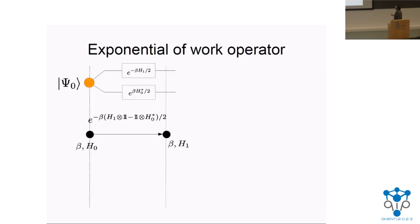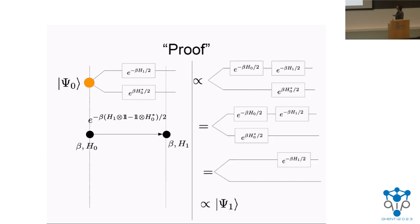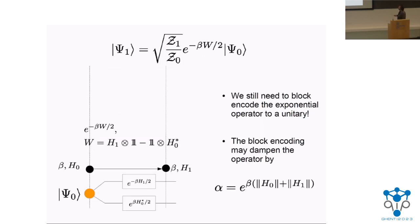The solution is to use what is called the work operator in the context of fluctuation theorems. What we do is carry one of these operator boxes to the other copy, giving us the exponential of the work operator — sometimes just called the exponential operator. Let's verify this actually brings us to the target state. This state is proportional to the desired state: there is an identity so we carry one box to obtain it, then carry another box to the first leg by taking the transpose, and they cancel since one comes with e^{βH₀} and the other with e^{-βH₀}. We end up with a state proportional to the thermal state at inverse temperature beta with respect to Hamiltonian H₁ — the target state.